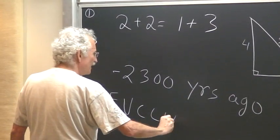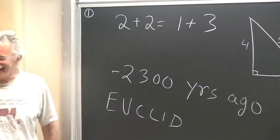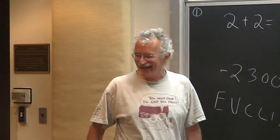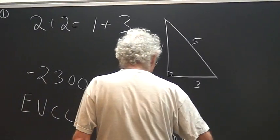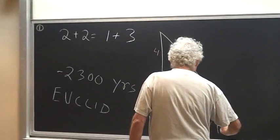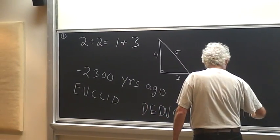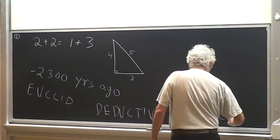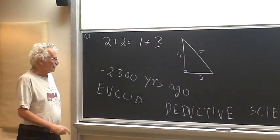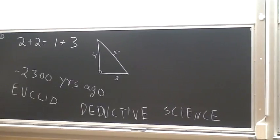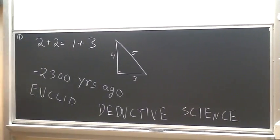And Euclid ruined mathematics by turning it into a deductive science. And Euclid and his friends and colleagues ruined mathematics by establishing, by inventing the axiomatic method.